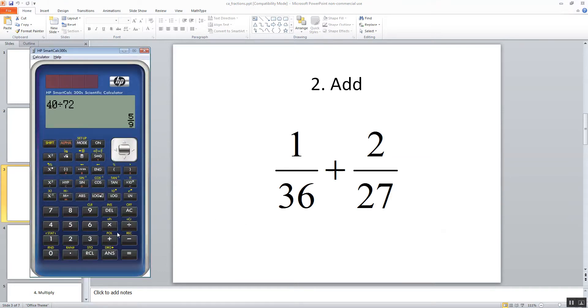Addition. And again, I want to clear that off. So I do 1 divided by 36 plus 2 divided by 27. Then do an equals, and that gives us 11 over 108. And again, you can go back and forth between fraction and decimal by pushing this SD button.